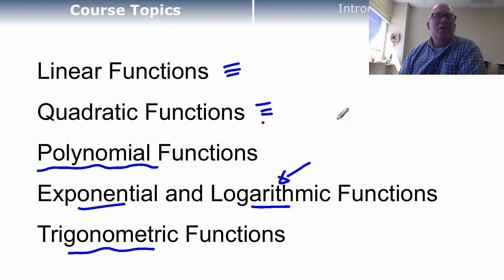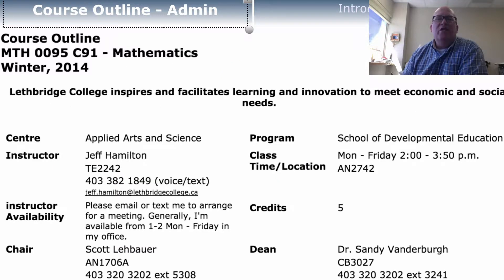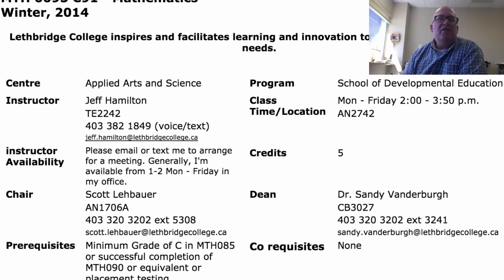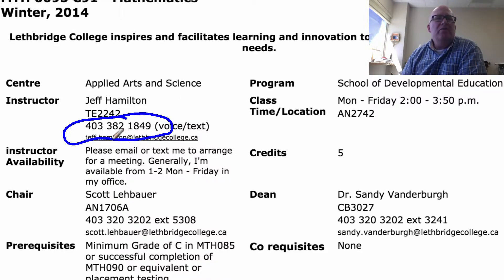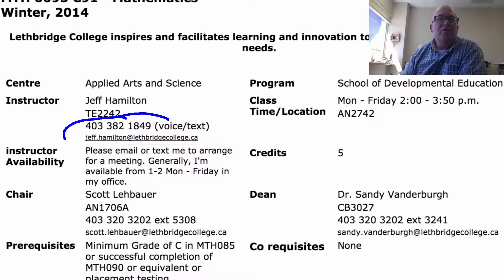So let's look through the course outline and see some things you'll be looking at this semester. Here's some general information on the course — you've got your center, my name, office address, and phone number. If you ever need to contact me for any reason, there's my cell phone — feel free to text me or call me if you have questions. My email address is also right there if you need to contact me that way.